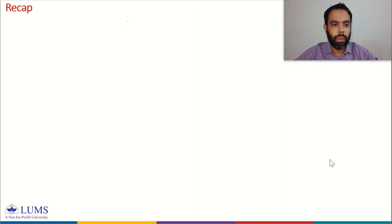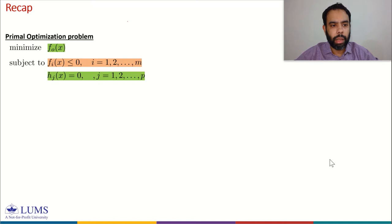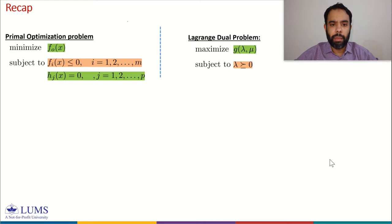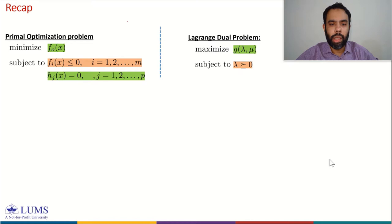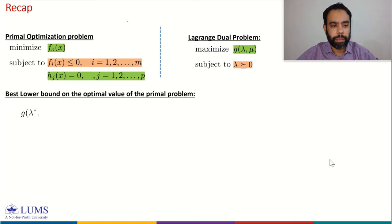For a primal optimization problem in which we minimize an objective function subject to some inequality constraints and equality constraints — and this primal optimization problem does not need to be convex — we can formulate a Lagrange dual problem in which we maximize the Lagrange dual function G(lambda, mu) subject to lambda greater than or equal to zero. This Lagrange dual problem is a convex optimization problem because we maximize a concave function. The solution of the Lagrange dual problem, D star, serves as a lower bound on the optimal value P star of the primal problem, and the difference P star minus D star is called the duality gap.